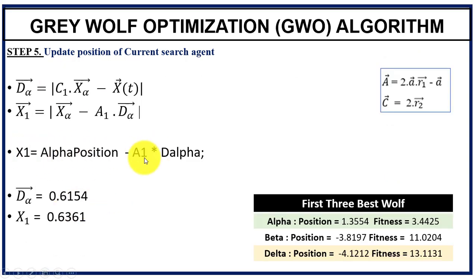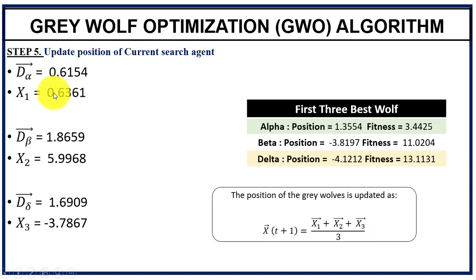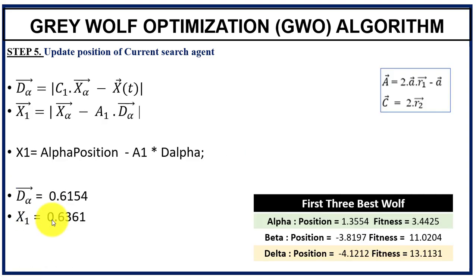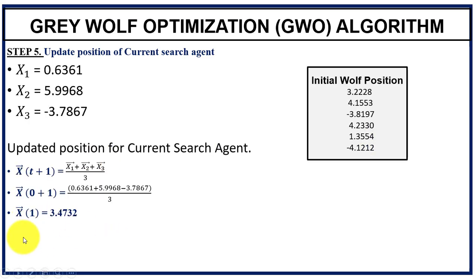At iteration t equals zero, substituting all values into the equations gives us D_alpha and X1. Similarly, we compute D_beta, D_delta, X2, and X3. We then add X1, X2, X3 and calculate their average. For example, the computed value for X1 is 3.4732, and in the next iteration this newly computed value will be used as the updated position.